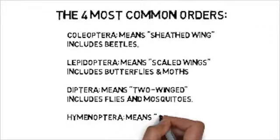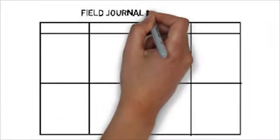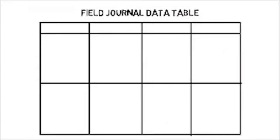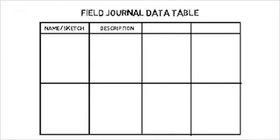Now let's set up our data table to organize the information we collect during our field research activity. Draw four columns and title them Name Sketch, Description, Order, and Quantity.